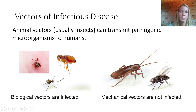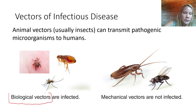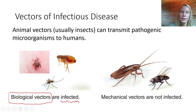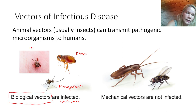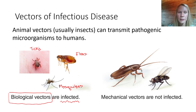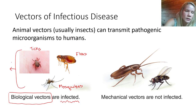Let's talk more about vectors of infectious disease — animals, usually insects, that can transmit a pathogenic microorganism to humans. The first category is biological vectors. The key distinction is that they are themselves infected, meaning the microorganism actually completes part of its life cycle inside that insect. The three classic examples of biological vectors in microbiology are mosquitoes, fleas, and ticks. These animals are infected with the pathogen and transmit it by biting the human, sending the pathogen directly into the blood.